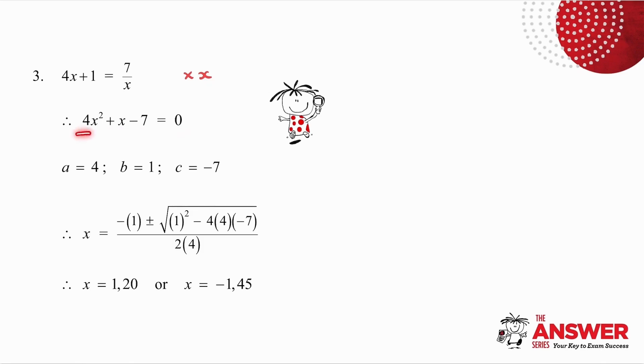My a value is 4, b is 1, and c is minus 7. Use those values, substitute into the quadratic formula, use your calculator and you get your two answers.